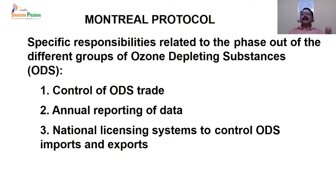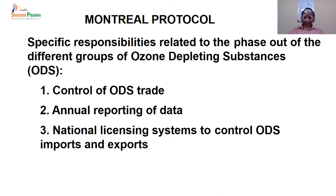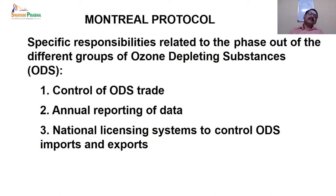They kept specific responsibility to phase out ozone depleting substances and gave three important frameworks. One is control of the ODS trade — import and export of ozone depleting substances between or inside countries has to be vigilantly monitored and a stock inventory made. They should report the data annually. Second, a national licensing system is implemented for countries which signed the treaty to control ODS export and import.